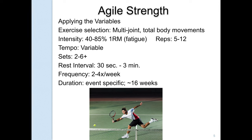For agile strength, tempo can be slow or fast. Sets are two to six per movement. Rest intervals depend on your outcome — if you're trying to develop strength, you want longer rest intervals; if you're trying to improve fitness or conditioning, shorter rest intervals. You can do these workouts two to four times a week, allowing at least one full day of rest between agile strength workouts. So you could do a strength workout Monday, a cycling class or yoga Tuesday, another strength workout Wednesday, and lower intensity Thursday.